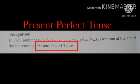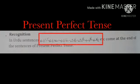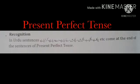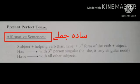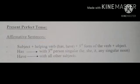Present Perfect Tense میں Urdu کے جملے چکا ہے، چکی ہے، چکی ہیں، چکے ہیں، لے لیا ہے، دے دیا ہے، کر لیا ہے پر end ہوتے ہیں۔